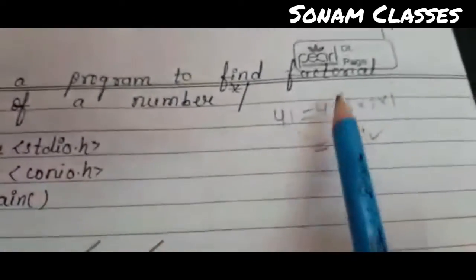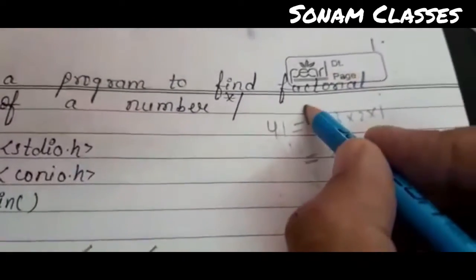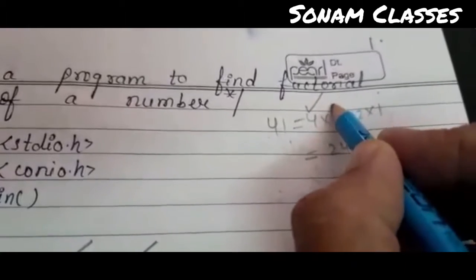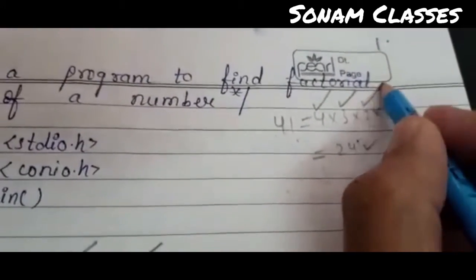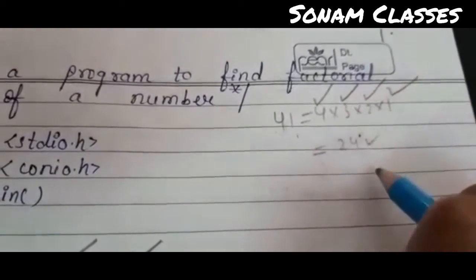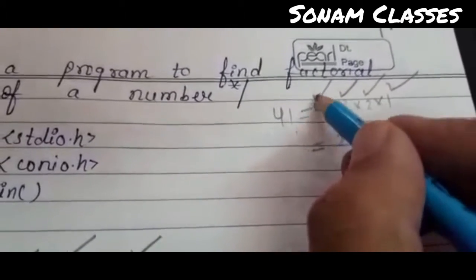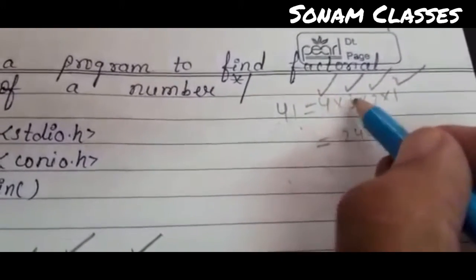When do we start the loop? I will say that the number is 4, then the number is 3, then the number is 2, then the number is 1. This means that I will start the value of n. When we start the index of the value, and then...